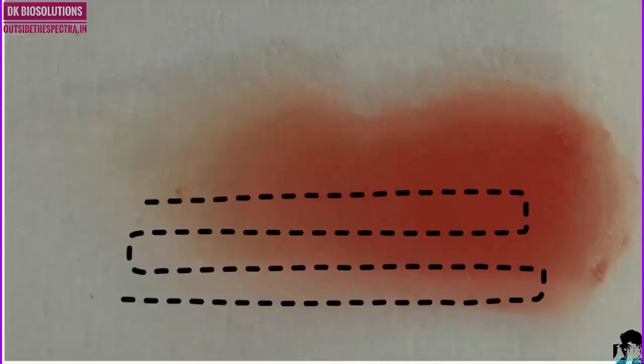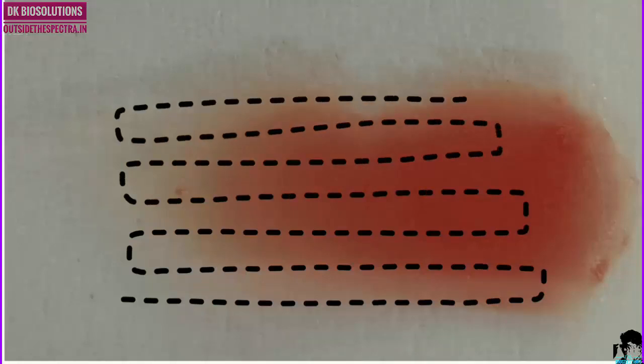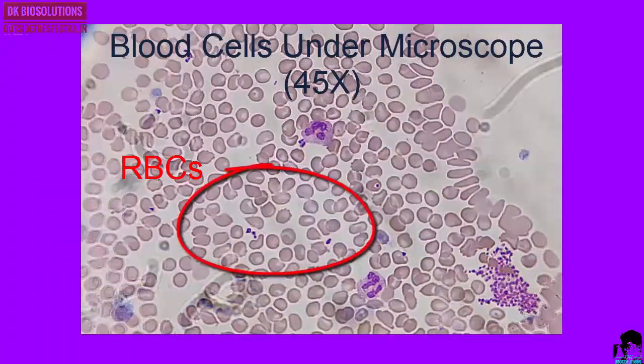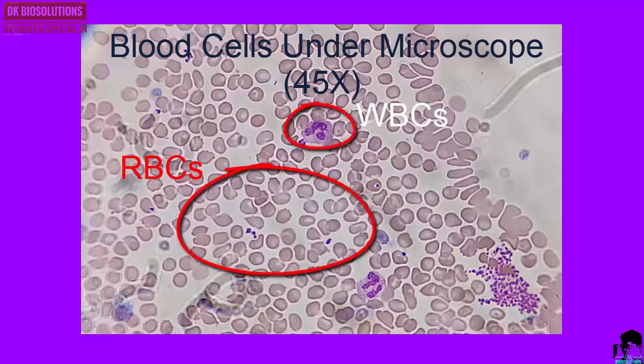Start the counting from one end of the field to the another and note the different types of leukocytes from each field. And the counting is continued till the total number of leukocytes, that is WBCs, become 100.